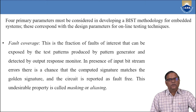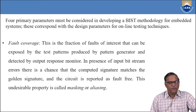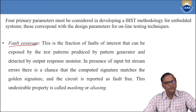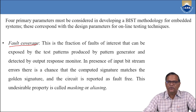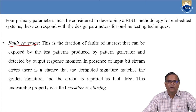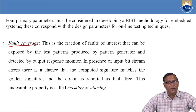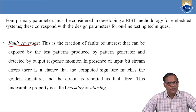There are four parameters which must be considered for developing the BIST methodology for any system. The first parameter is fault coverage — this determines whether the logic circuit is good or bad. Sometimes the circuit may have faults that are not detected. Suppose there are 100 types of faults occurring in a circuit; if 90 faults are detected by the BIST, then we say the fault coverage is 90%. This is the fraction of faults of interest that can be exposed by the test patterns generated by the hardware pattern generator.